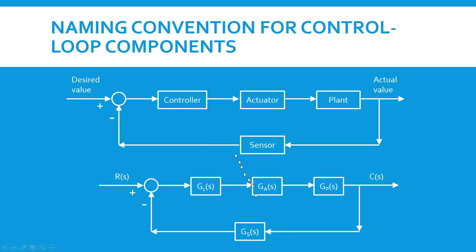In this control loop shown on the bottom I've abbreviated those and given them mathematical names. The desired value is R and the actual value is C. R stands for reference. C stands for, I'm not sure what C stands for, but C is one of the standard variables used to describe the output of the controller. And the components are named G. That's the standard universal name for a component in a block with the subscript indicating which component that belongs to.